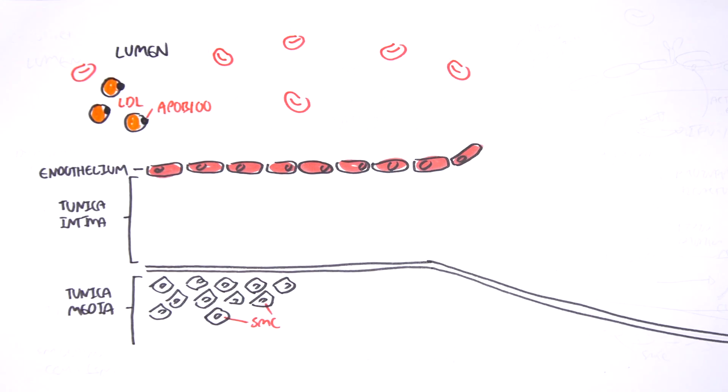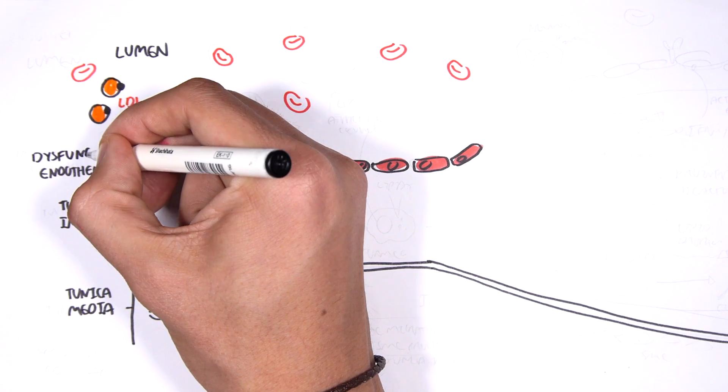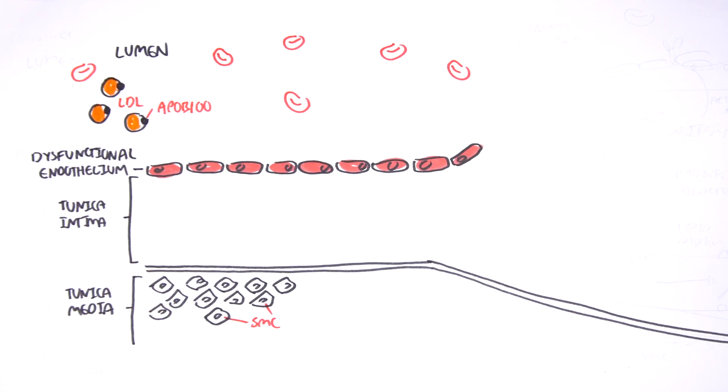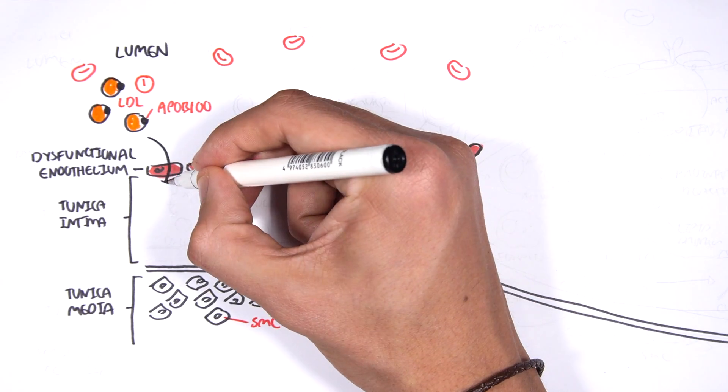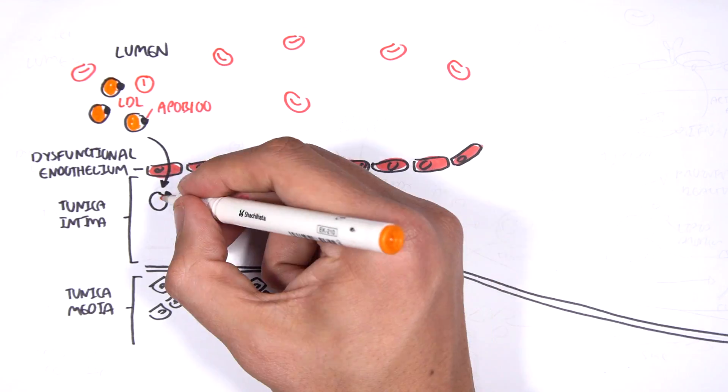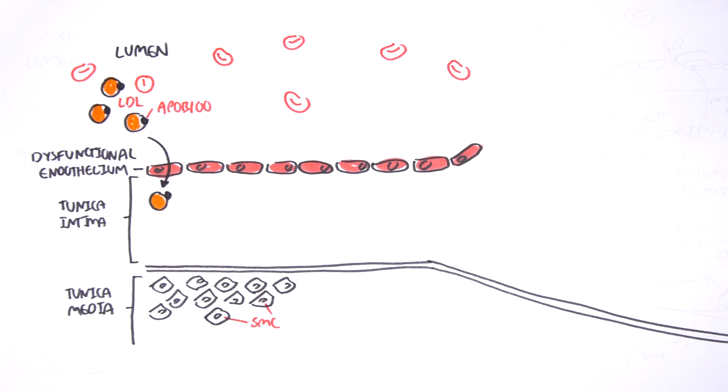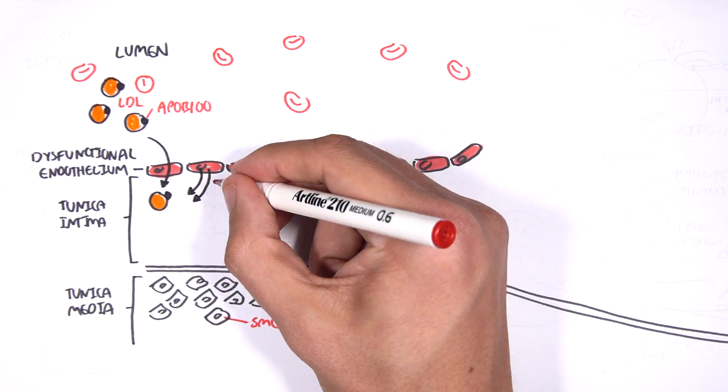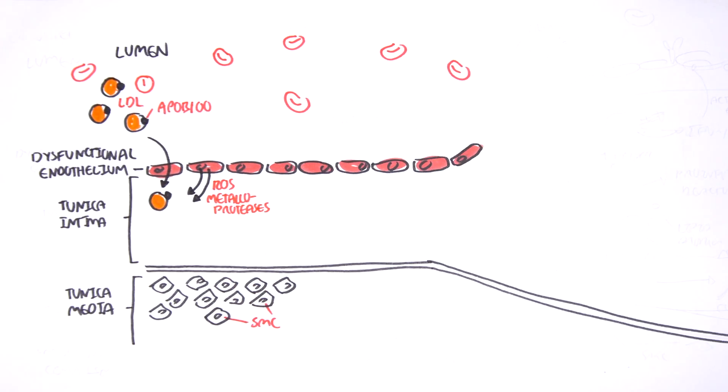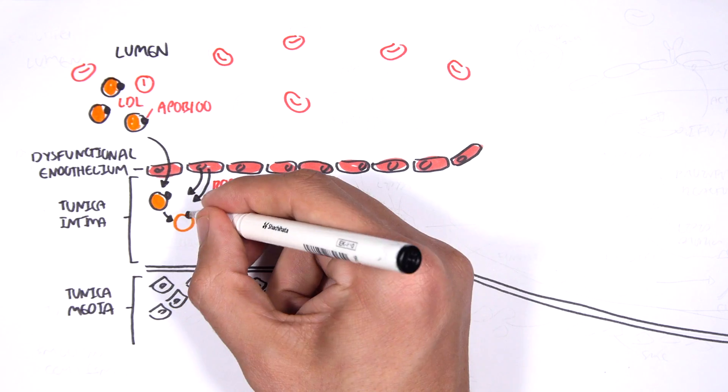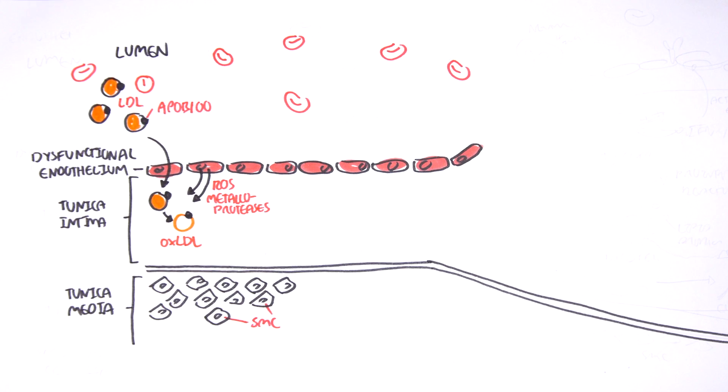Anyway, let's just say we have dysfunctional endothelial cells here. This allows a lot of LDLs to basically move into the tunica intima layer. When it moves into the tunica intima layer, the dysfunctional endothelial cells release reactive oxygen species and other enzymes such as metalloproteases, which will oxidize the LDL. So, when the LDL is oxidized, it cannot actually leave the tunica intima. It's trapped.